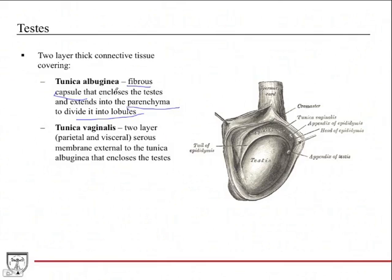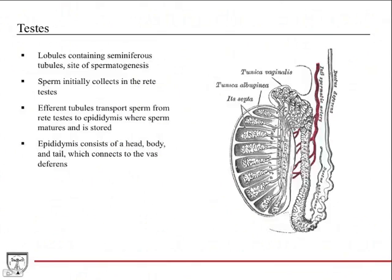Outside of the tunica albuginea — enclosing it — is the tunica vaginalis, which is a two-layer structure with a parietal layer and a visceral layer. This is really a serous membrane that encloses the testes around the tunica albuginea. So here's the tunica vaginalis in the diagram. This white section represents the tunica albuginea, and as you can see it extends into the parenchyma, creating these lobules — the functional units where spermatogenesis occurs.